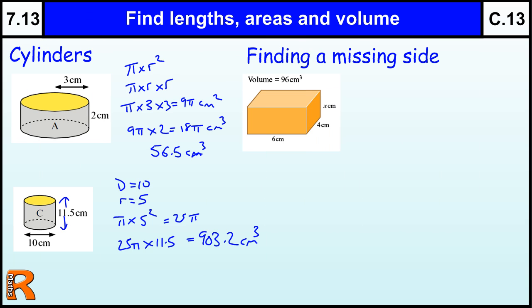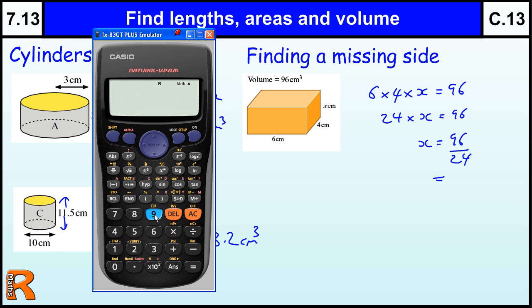A slight variation on this is we could be given the volume to start with and one of the sides is missing. So we work out the area of the two sides we've got there, and then we divide the volume by that. So in this cuboid, if we work out the area of the base, it's 6 times 4. So we've got 6 times 4, and then we times by the x to get the volume, which is 96. So we've got 24, 6 times 4, times x equals 96. So x equals 96 divided by 24, which gives us 4.